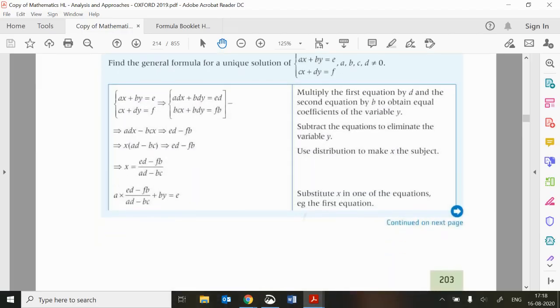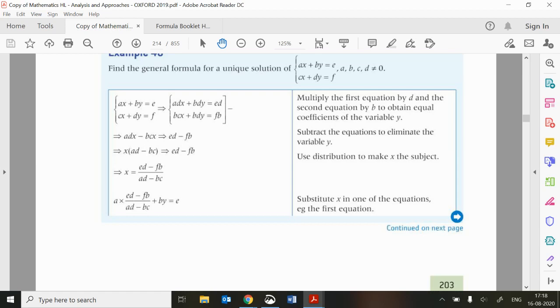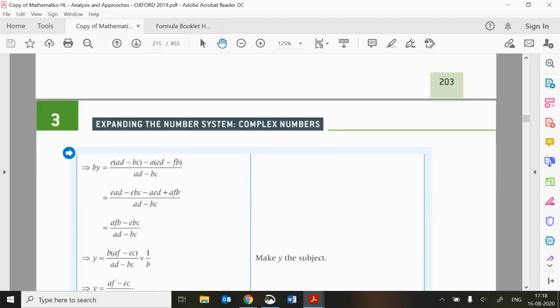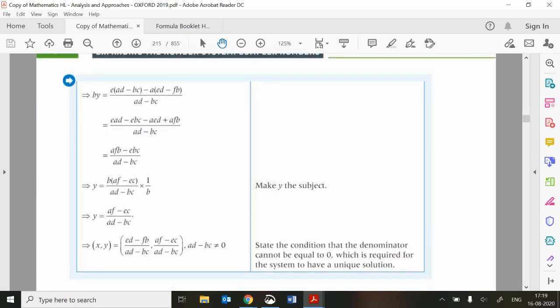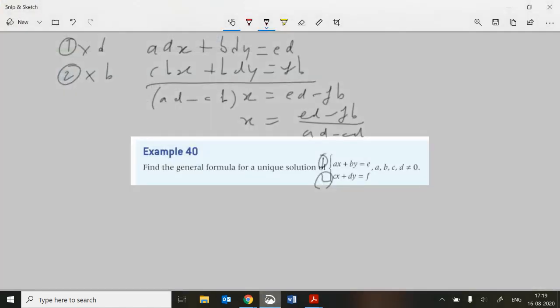The way the book takes this forward is substituting into the first equation to get Y. The problem is that creates a lot of working out with algebraic fractions. From my point of view, it's actually quicker to just eliminate X. So times the first line by C and the second line by A. When we do 1 times by C, we get ACX and ACX underneath, plus BCY equals EC, and then ADY here and AF.